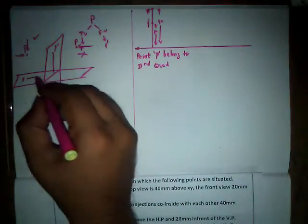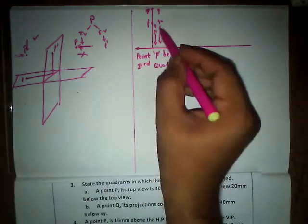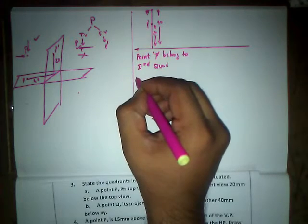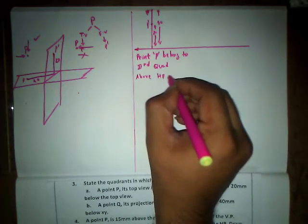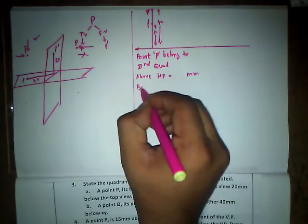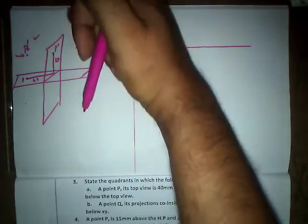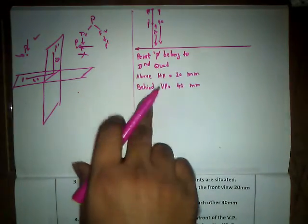Point P belongs to the second quadrant. According to the second quadrant designation: above HP equals 20 mm — since P dash is at 20 mm from XY — and behind VP equals 40 mm, since small p is at 40 mm from XY. This is how we find and designate the quadrant.